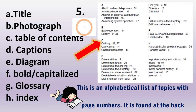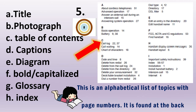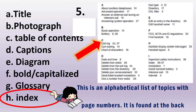For number 5, this is an alphabetical list of topics with page numbers. It is found at the back. If your answer is letter H — Index — that's correct.